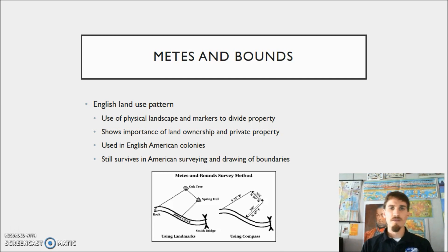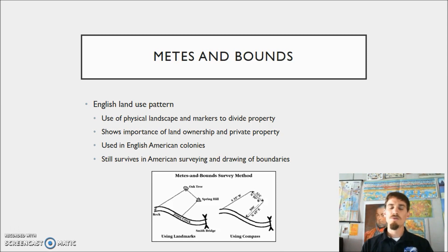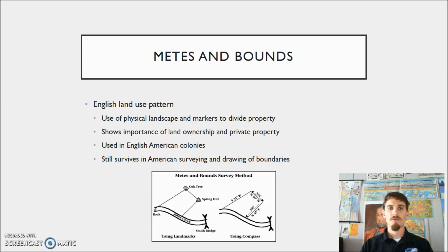Beyond showing how the English subdivided the land, this system also incorporates the idea of private ownership of property, which is significant in understanding what these people thought about land use. This is much different from the native people who didn't really understand the concept of private ownership, or other cultures around the world that look at more communal or tribal ownership of property.